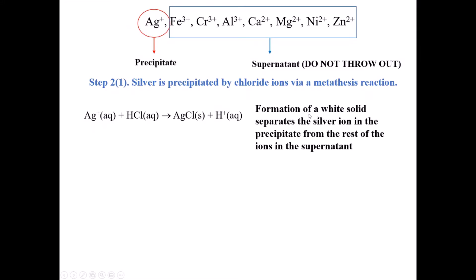Now we're going to do our first separation. In step two, silver is precipitated by chloride via a metathesis reaction. When we add hydrochloric acid, the chloride reacts with the silver to form silver chloride solid. This leaves behind all the other ions in the supernatant, since they are all soluble in the presence of chloride. The formation of a white solid precipitate is an indication that you have silver.